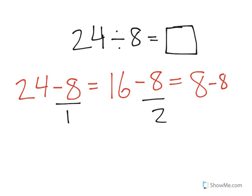And last when I subtract 8 once more I end up with 0 which means that all of the 24 we started with is accounted for and that was my third subtraction which means 24 divided by 8 is equal to 3.